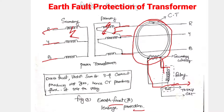The relay coil uses induction type relays. The induction type relay is similar to an induction motor or induction type energy meter. You can see in power transformer substations that induction meter type energy meters and relays are used.